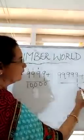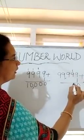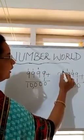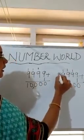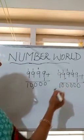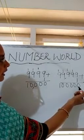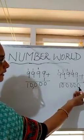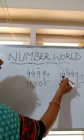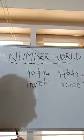9 and 1 is 10, carry 1. Then 9 and 1 is 10, carry 1. Again 9 and 1 is 10, carry 1. Again 9 and 1 is 10, carry 1. Again 9 and 1 is 10, and no number left to carry — so we write it out fully. This number has 6 digits: 1, 2, 3, 4, 5, 6. So the largest 5-digit number plus 1 gives the smallest 6-digit number.